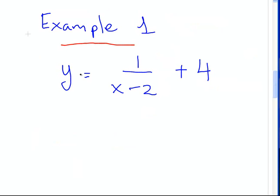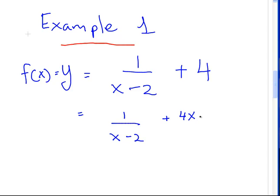Here's the first example: y equals 1 over x minus 2, plus 4. What I'm going to do is re-express this as 1 over x minus 2, plus 4x minus 8 over x minus 2. I'm going to use this as an example here later on. The answer works out to be 4x minus 7 over x minus 2.